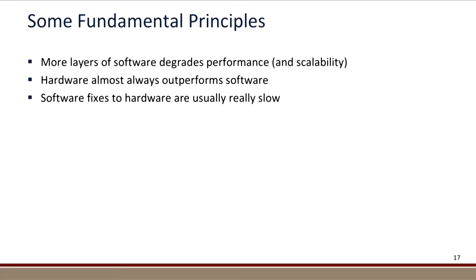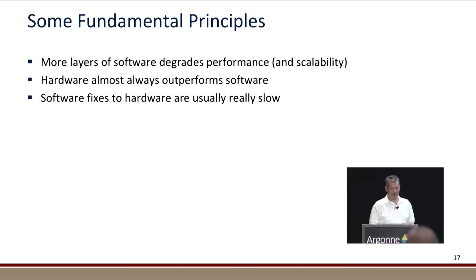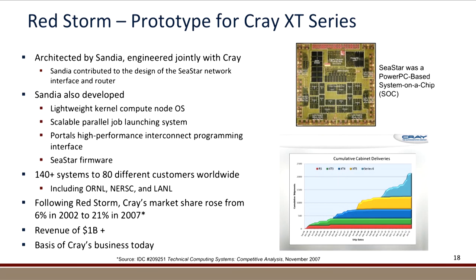Some fundamental principles we apply to networking: more layers of software degrades performance and scalability — you don't get performance by adding more software layers. Hardware almost always outperforms software. And software fixes to hardware are usually really slow. These principles guide how we approach co-design for the network.